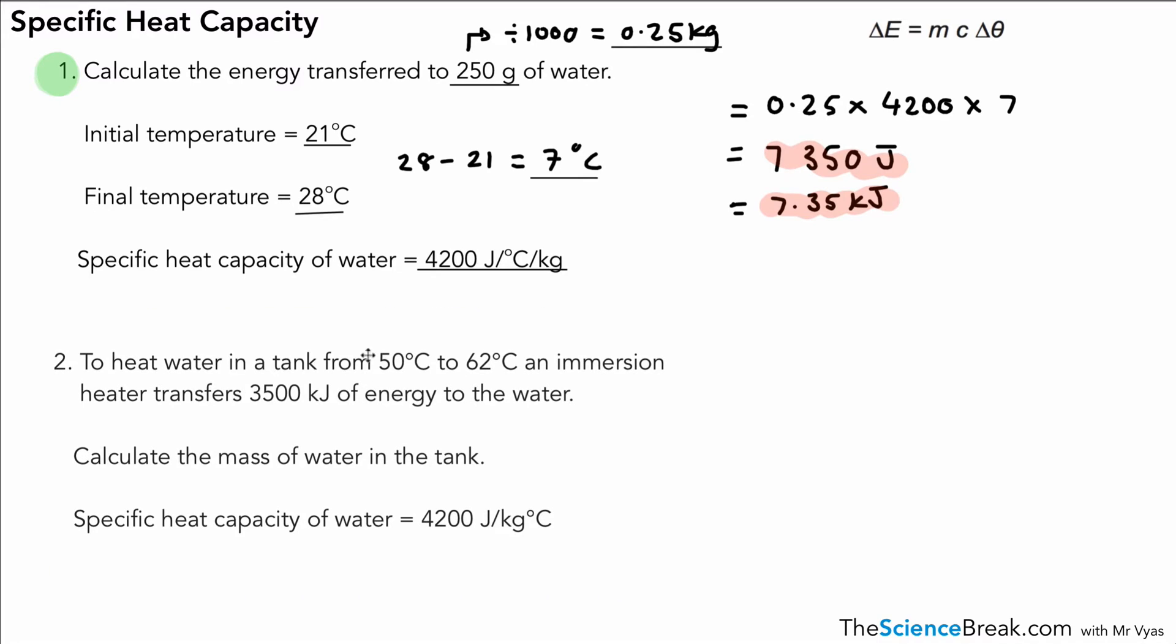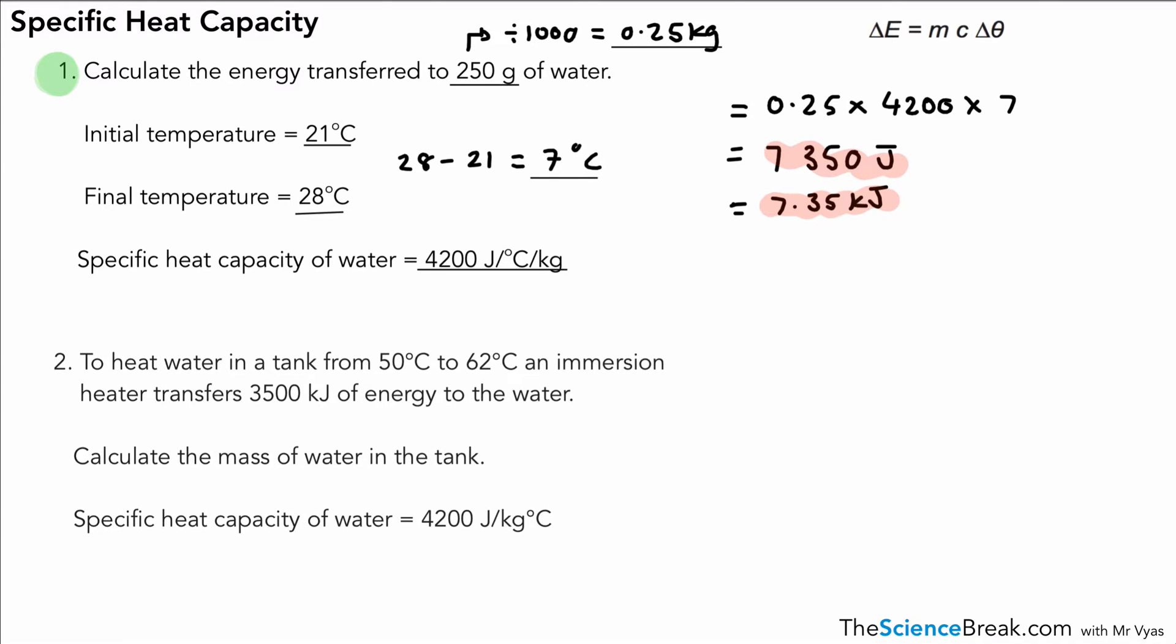Okay, now for the last question, slightly trickier. Not the hardest kind of question that you'll get in GCSE physics, but it is certainly slightly trickier because we've got to rearrange an equation. So here's our key bits of information. We've got a temperature rise of 50 to 62, which will be our delta theta or our change in temperature, and that's going to be 12—62 take away 50 is 12.